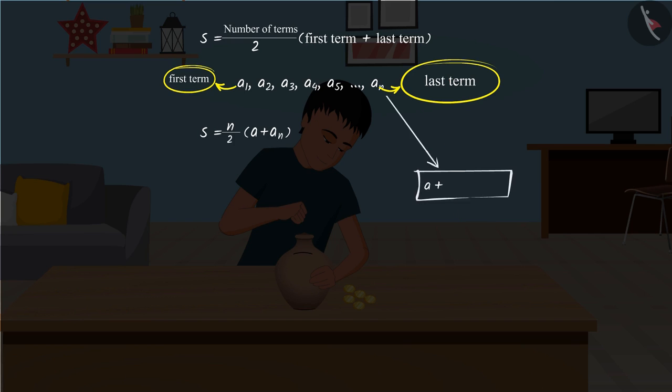Absolutely correct. It will be a plus n minus 1 multiplied by d, where d is the common difference of the arithmetic progression.